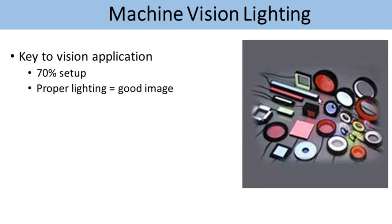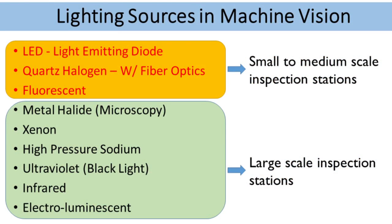With machine vision lighting, 70% of the problem is solved with a proper lighting setup, which means lighting plays a very important role. The moment you have proper lighting, you get a good image. The lighting sources include LED, halogen, fluorescent lighting, metal halide, infrared, ultraviolet, and many other different lighting sources.